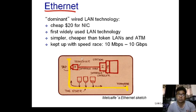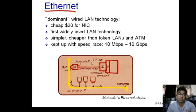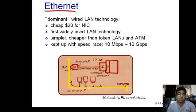The frame's destination MAC address is matched with the MAC address of each network interface card. If it matches, the complete frame is absorbed by that particular node. Otherwise, if it doesn't match, that particular node rejects that frame.